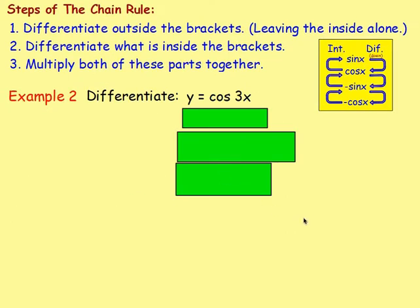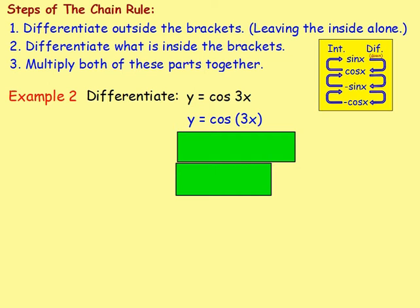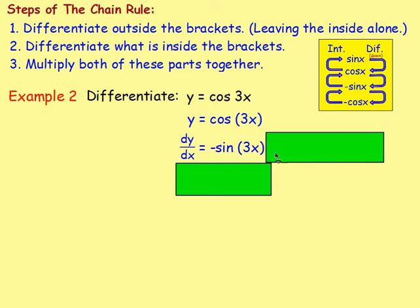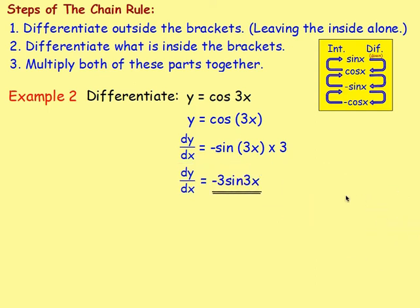Example 2: differentiate y equals cos 3x. Again, think about where the brackets go. Around the 3x — because it's the cos of that whole thing, the whole of the 3x. So differentiating outside the brackets, dy/dx would equal: if you differentiate cos, it goes to negative sine. So that becomes negative sine — keep the brackets as they are, so negative sine 3x. But then differentiate inside the brackets: differentiating 3x gives us 3, so we're going to multiply by 3. Put the 3 to the front, so it becomes negative 3 sine 3x.